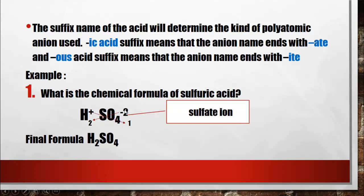Since the charges are not equal, we use the crossover or crisscross process: the charge of hydrogen becomes the subscript of the sulfate ion, and the charge of sulfate becomes the subscript of hydrogen. Finalizing, the formula is H2SO4, which is the chemical formula of sulfuric acid.